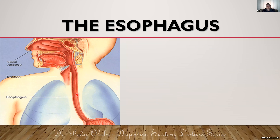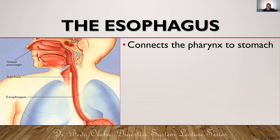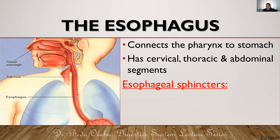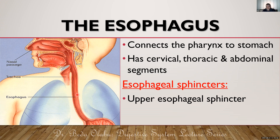Then food goes to the esophagus, which connects the pharynx to the stomach. There is a part of the esophagus in the neck — the cervical esophagus — a part in the thorax — the thoracic esophagus — and a small segment in the abdomen — the abdominal esophagus, which is the shortest part. Two sphincters govern the esophagus: the upper esophageal sphincter and the lower esophageal sphincter, also called the cardiac sphincter.